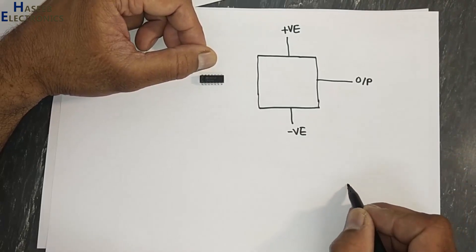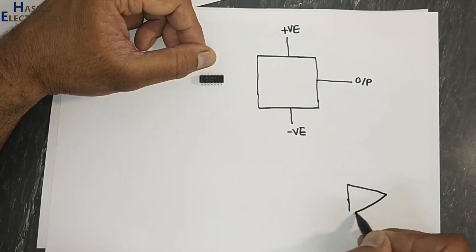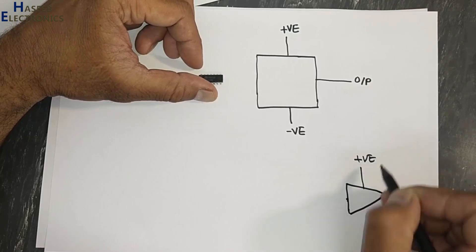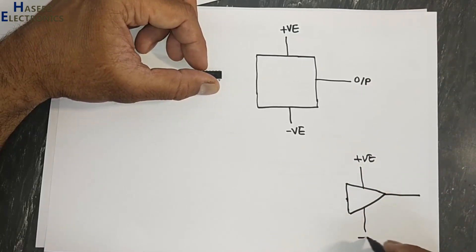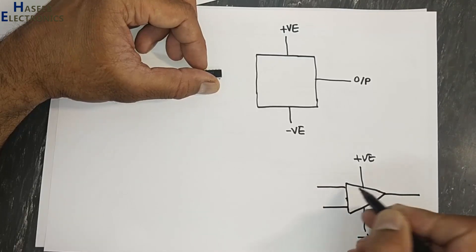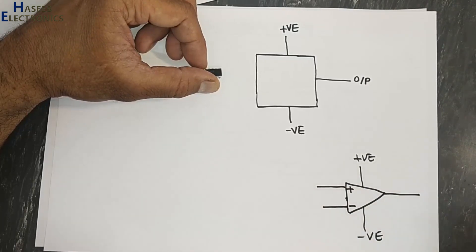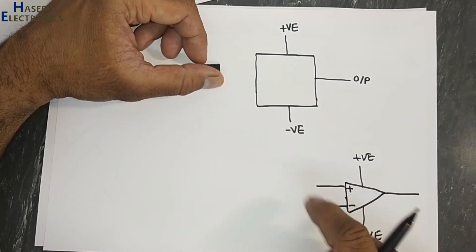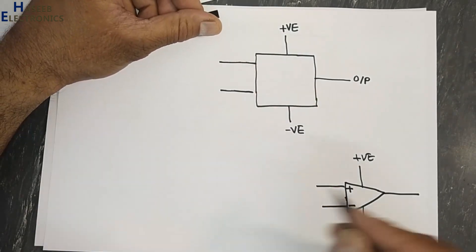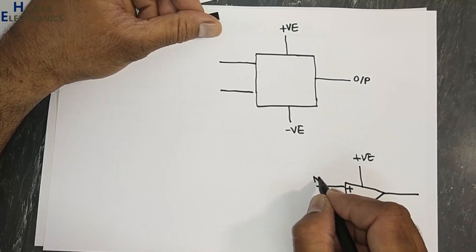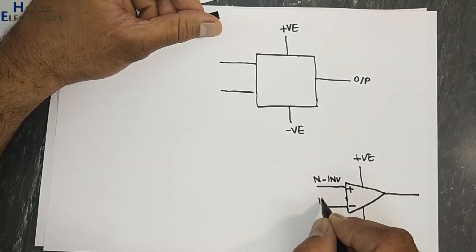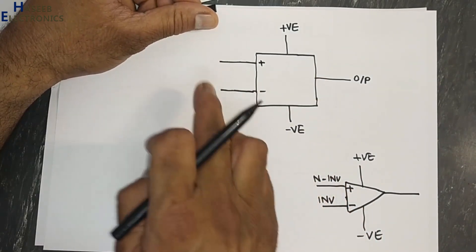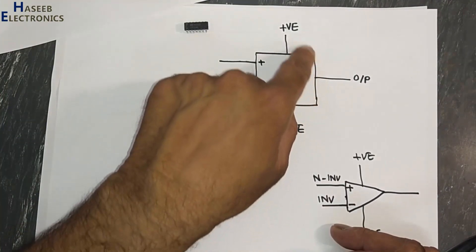When we see a diagram, we see a triangle shape with one output, one power supply — positive and negative — and two inputs marked as positive and negative. These are the supply voltages and two signal inputs. One is called the non-inverting input and the other is called the inverting input — negative and positive — basically indicating the input type. These inputs define the role of this IC.